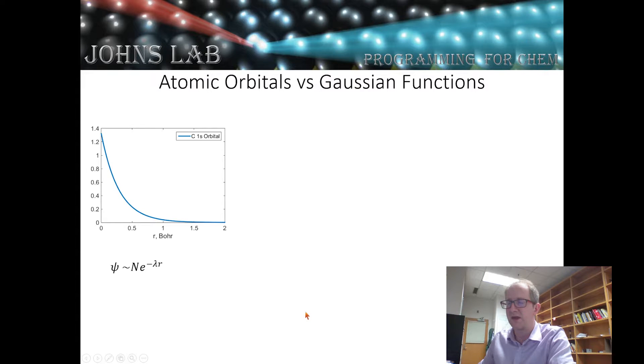So doing a Gaussian as our orbital might allow us to calculate things swiftly, but maybe not so accurately. The way that we actually do calculations is for a given basis function, we make it be the sum of multiple Gaussians.